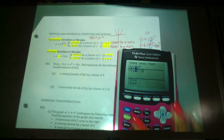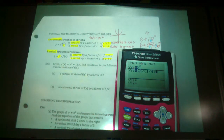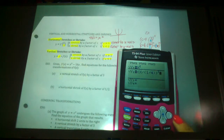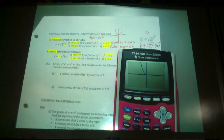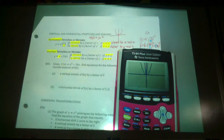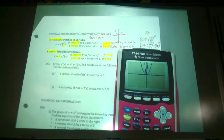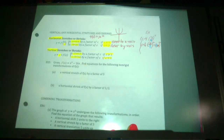I'll enter into the calculator: (x ÷ (1/4)) squared. There's the original, and there's the horizontal shrink — it did get closer to the y-axis, shrinking horizontally inward. Now let's look at vertical stretches and shrinks.